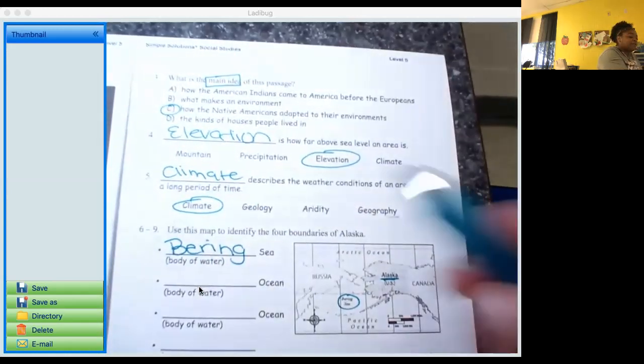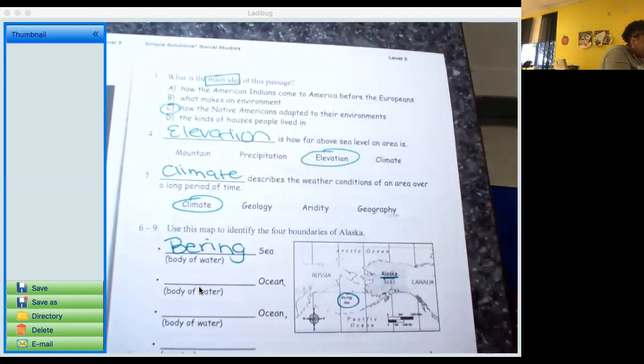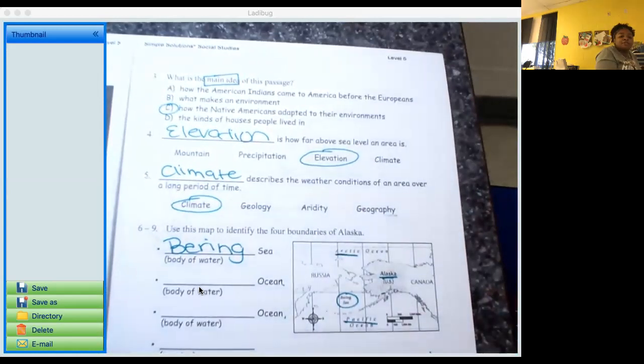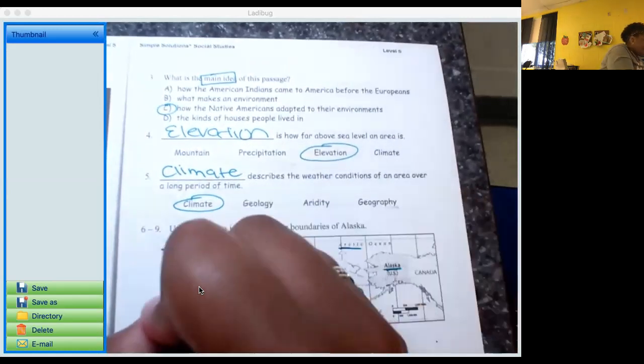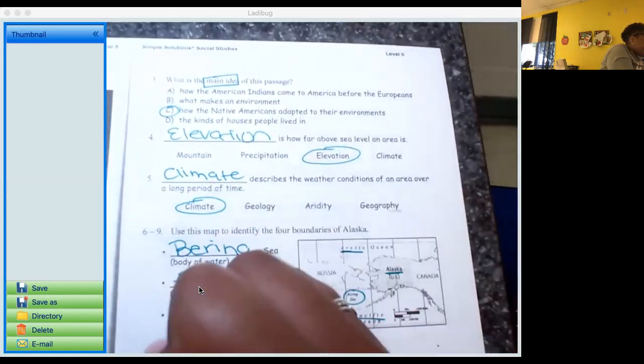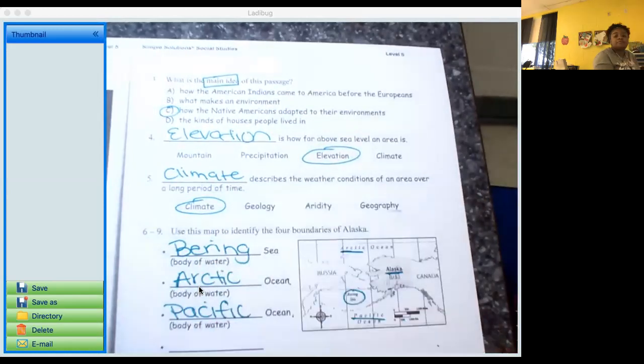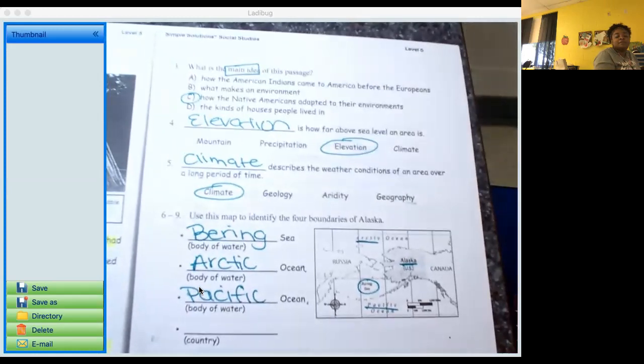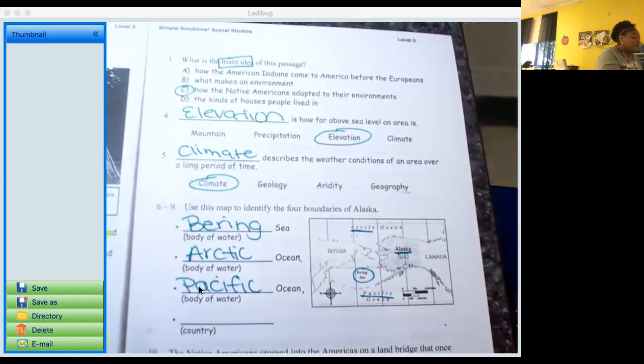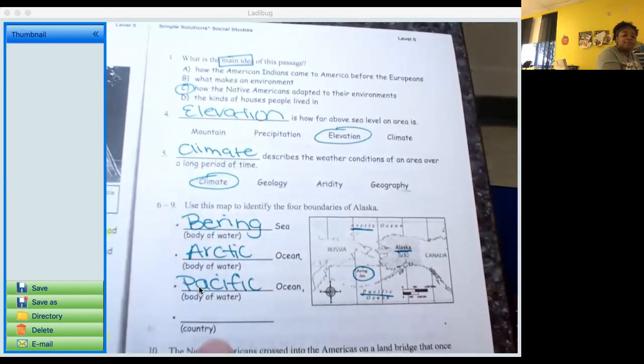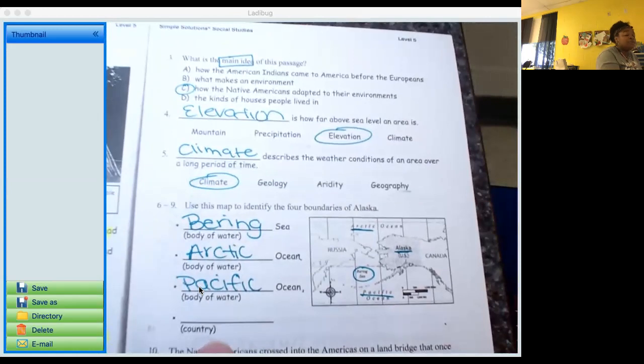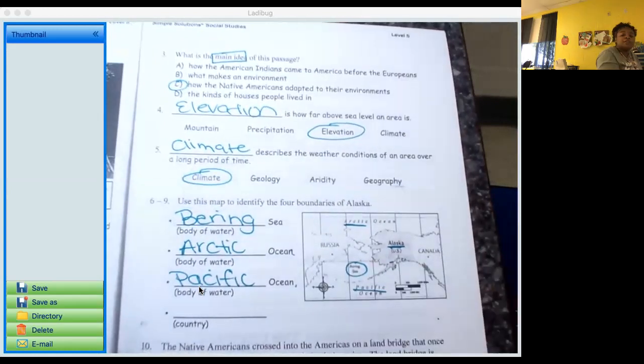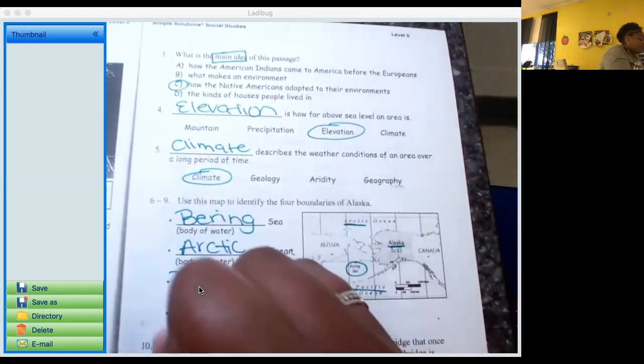Okay, next we're looking for two oceans. If you look closely, you have the Arctic Ocean here and the Pacific Ocean here. Let's write those in. Okay, and last we're looking for a country close to Alaska. I see two countries here. You can choose which one you would like. You could choose Canada or you could choose Russia. It does not matter.